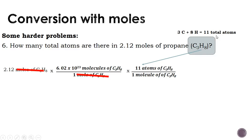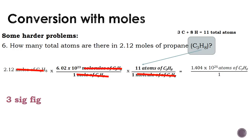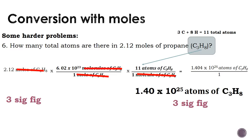When we use that conversion, molecules of propane cancel and our final answer is in atoms of propane. Doing the math, we need 3 sig figs, so our final answer is 1.40 times 10 to the 25th atoms of propane.